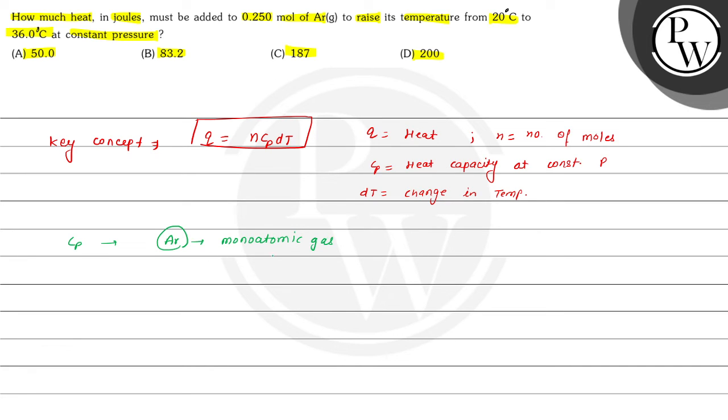And for monoatomic gas, the value of Cp is equal to 5/2 R.